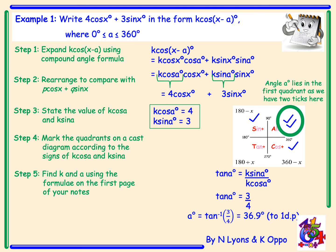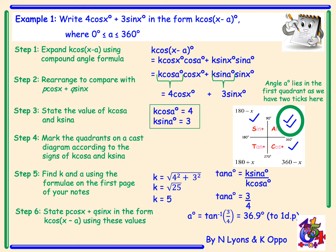We still have to calculate k. Using the formula, k is equal to the square root of 4 squared plus 3 squared — taking the values of k cos a and k sin a and squaring them under a square root. 4 squared plus 3 squared is 16 plus 9, which gives 25. The square root of 25 — please remember to simplify fully — gives k equals 5. Therefore, 4 cos x plus 3 sin x is equal to 5 cos of x minus 36.9 degrees.